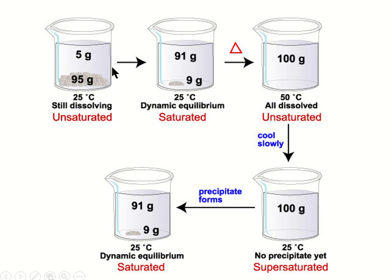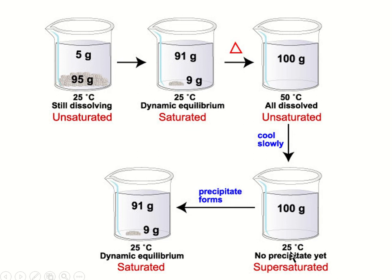Here again are the options. In an unsaturated solution, solute is still dissolving. In a saturated solution, there is a dynamic equilibrium — the amount precipitating out equals the amount dissolving. In an unsaturated solution at higher temperature, everything is dissolved. By cooling it down slowly, we make a supersaturated solution — no precipitate yet, but as it cools or gets agitated, we quickly see the precipitate form.